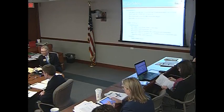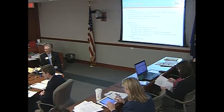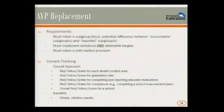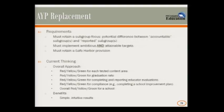The AYP replacement must retain a subgroup focus with potential differences between accountable subgroups and reported subgroups, implement ambitious and attainable targets — a difficult tension — and retain a safe harbor provision. The current overall approach would give a red, yellow, or green for each tested content area, for graduation rate, for completing and reporting educator evaluations, and for compliance such as completing a school improvement plan, plus an overall red, yellow, green for each school. The benefit is simple, intuitive results.